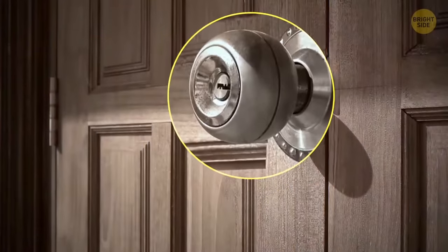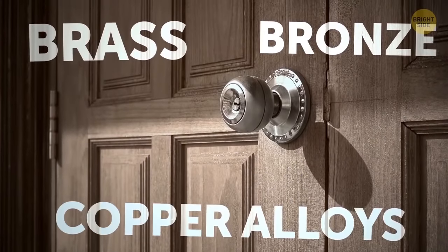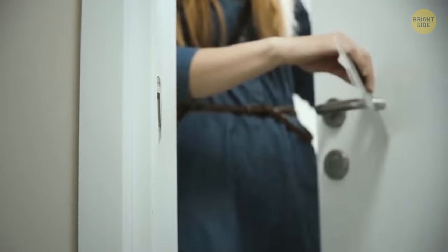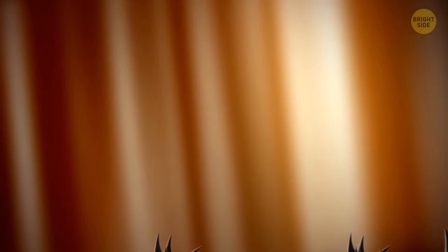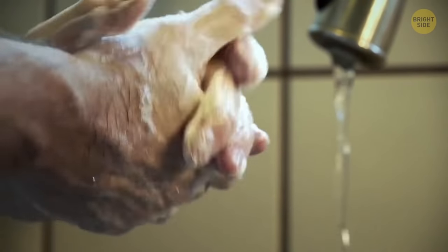A good doorknob is one that's made of brass, bronze, or some copper alloys. These metals have an anti-germ effect. Bacteria spread way slower on them. They also get rid of germs pretty fast, within a couple of hours. Nope, it doesn't mean you don't have to wash your hands.